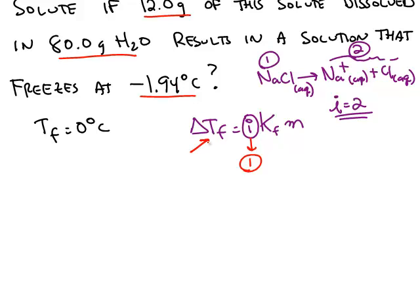Delta Tf in this formula is absolute value. So the pure water freezes at 0 degrees. The solution freezes at negative 1.94. Delta Tf is the absolute value of the difference between those two, 1.94 degrees Celsius.